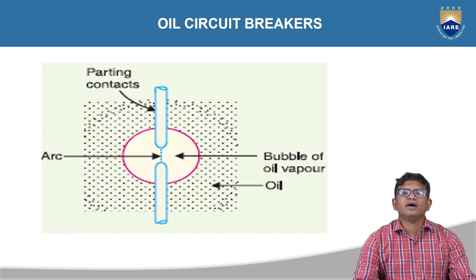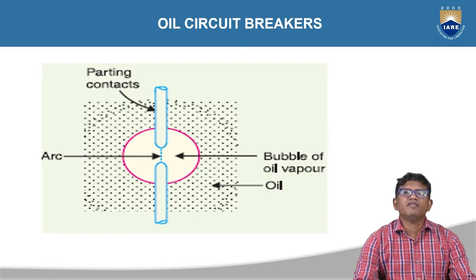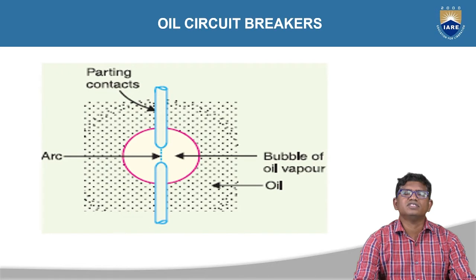Under abnormal conditions, excess current flows through the contacts of the breaker. The contacts get overheated. By utilizing this heat energy, the oil is vaporized. The vaporized oil is disassociated into various gases, and the major gas is hydrogen gas.